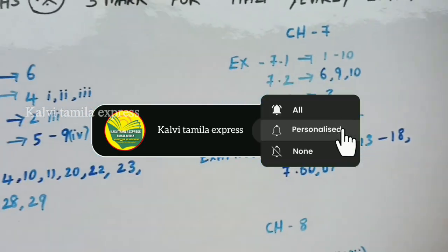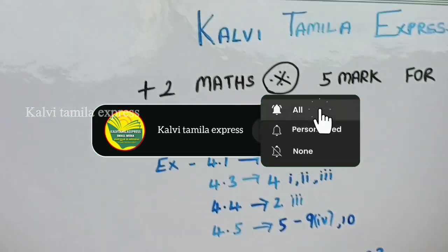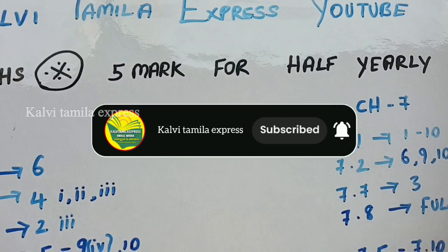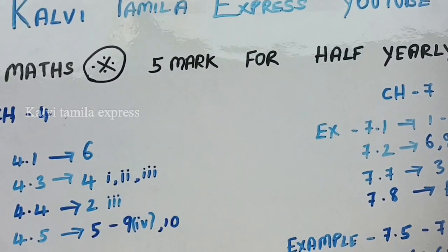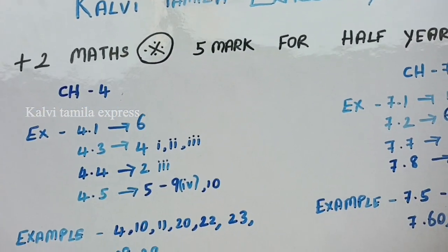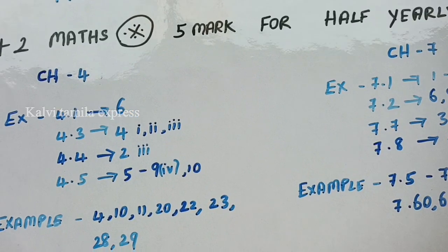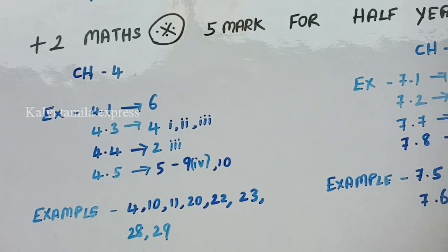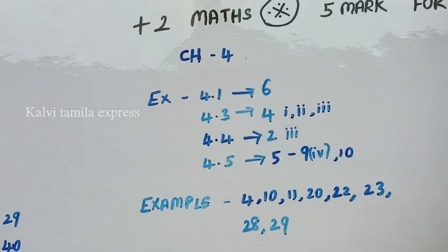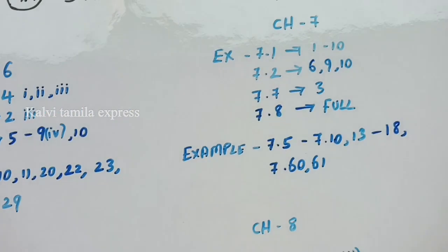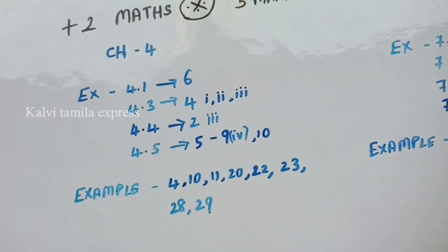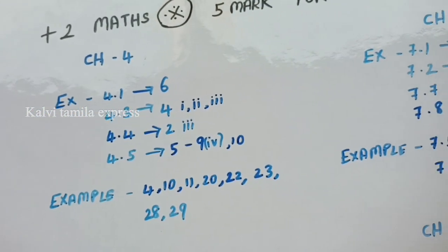So, let's see the WhatsApp group. First, we will see an important 5 marks. So, in this month, from this month you will see more and more important 5 marks. I will say more about 5 marks. You will see above 5 marks. So, see more of 1 marks — check out the above 1 marks.